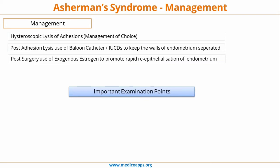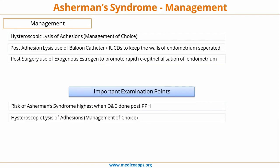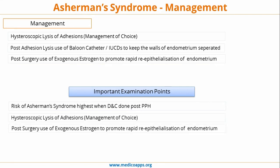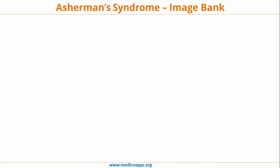The most important exam points for Asherman's syndrome: the risk is highest when D&C is performed post-postpartum hemorrhage (PPH). Hysteroscopic lysis of adhesions is the management of choice, and post-surgery use of estrogen promotes re-epithelialization of the endometrium. These are the critical examination points.